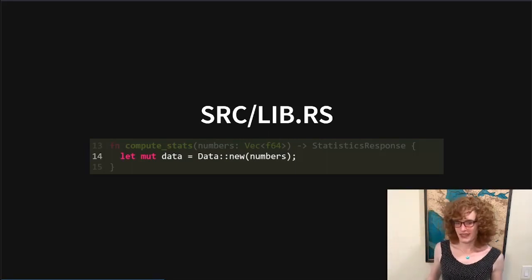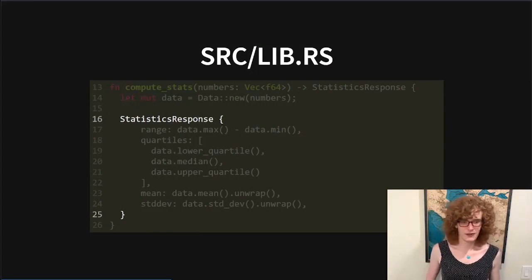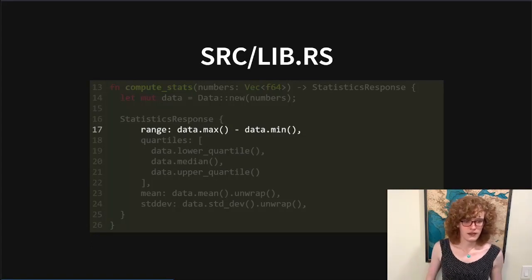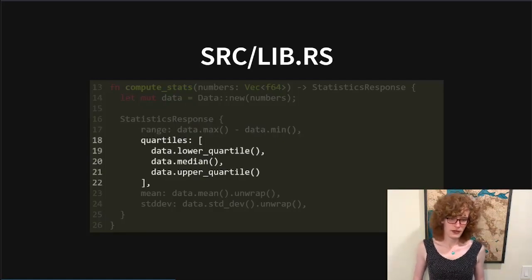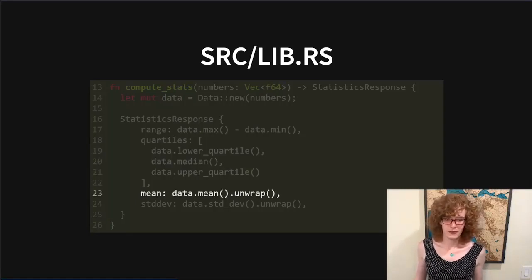Now we can fill in our StatisticsResponse. Computing the range is relatively straightforward — very similar to Python, we subtract the min from the max. Computing the quartiles is also pretty straightforward — we can use the lower_quartile, median, and upper_quartile functions on our Data instance. Computing the mean is very straightforward, but it has one extra trick: the call is `data.mean().unwrap()`.